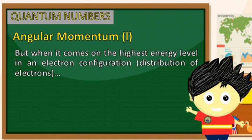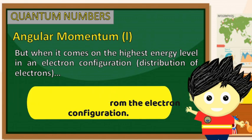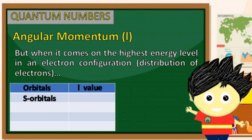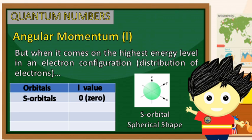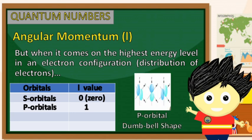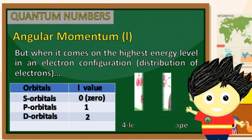But when it comes to the highest energy level in an electron configuration, kung sakali na tayo ay sumulat ng electron configuration ng isang atom, ang pagbabasihan natin dito ay ang pinakamataas na energy level na naging resulta ng ating electron configuration. Ibebase natin ito sa L value ng mga orbitals natin. Kapag ang s-orbital ang naging highest energy level, ito ay may L value na 0, kung saan ang shape nito ay tumutukoy sa isang spherical shape. Kung ang highest energy level naman natin ay ang p-orbital, ang L value nito ay 1, at ang shape naman nito ay nalalapit sa isang dumbbell na nag-e-extend sa tatlong axis. Kung ang mataas na energy level ay ang d-orbital, ito naman ay may L value na 2, kung saan ang hugis ay nalalapit sa isang 4-leaf clover.